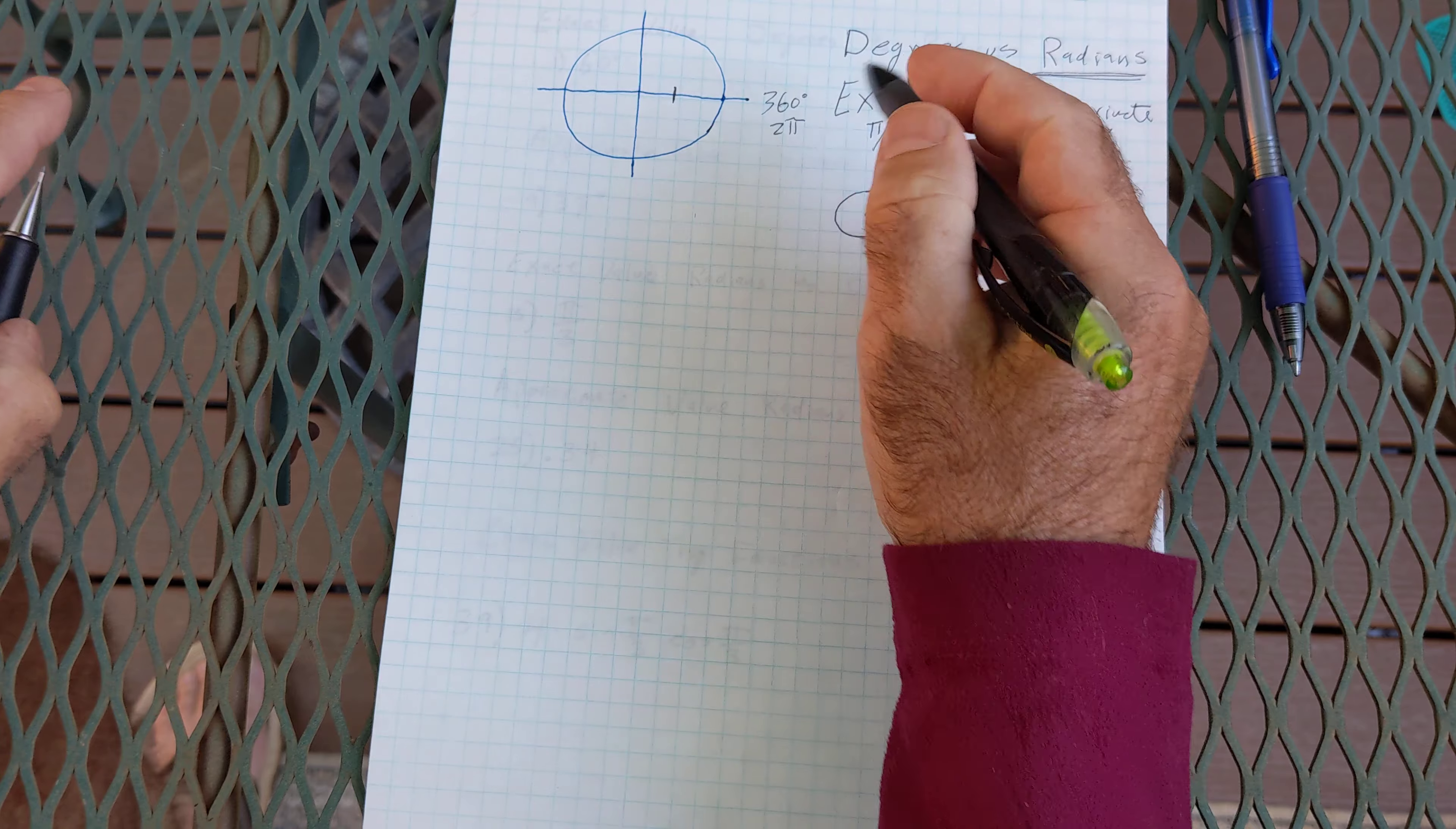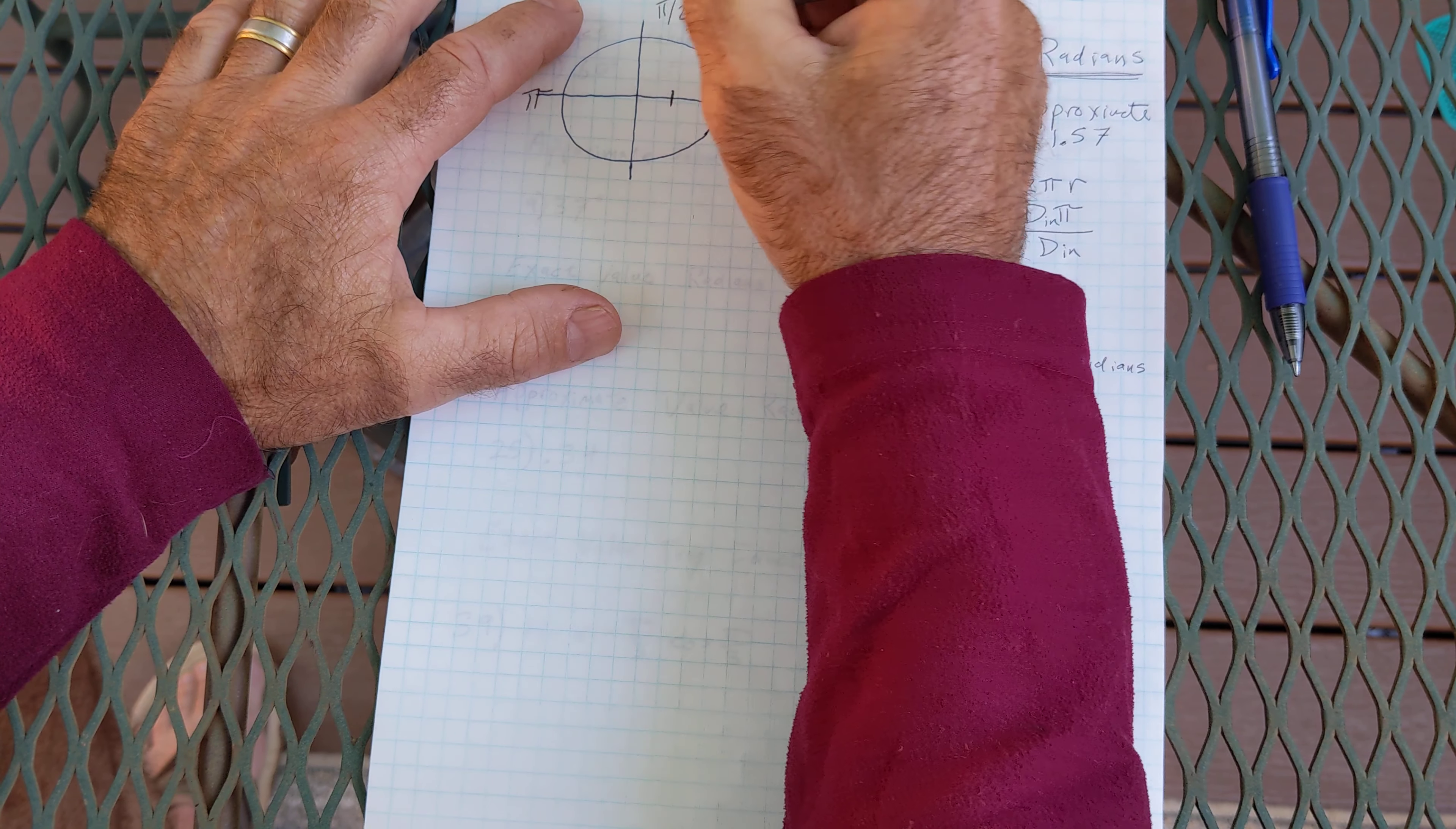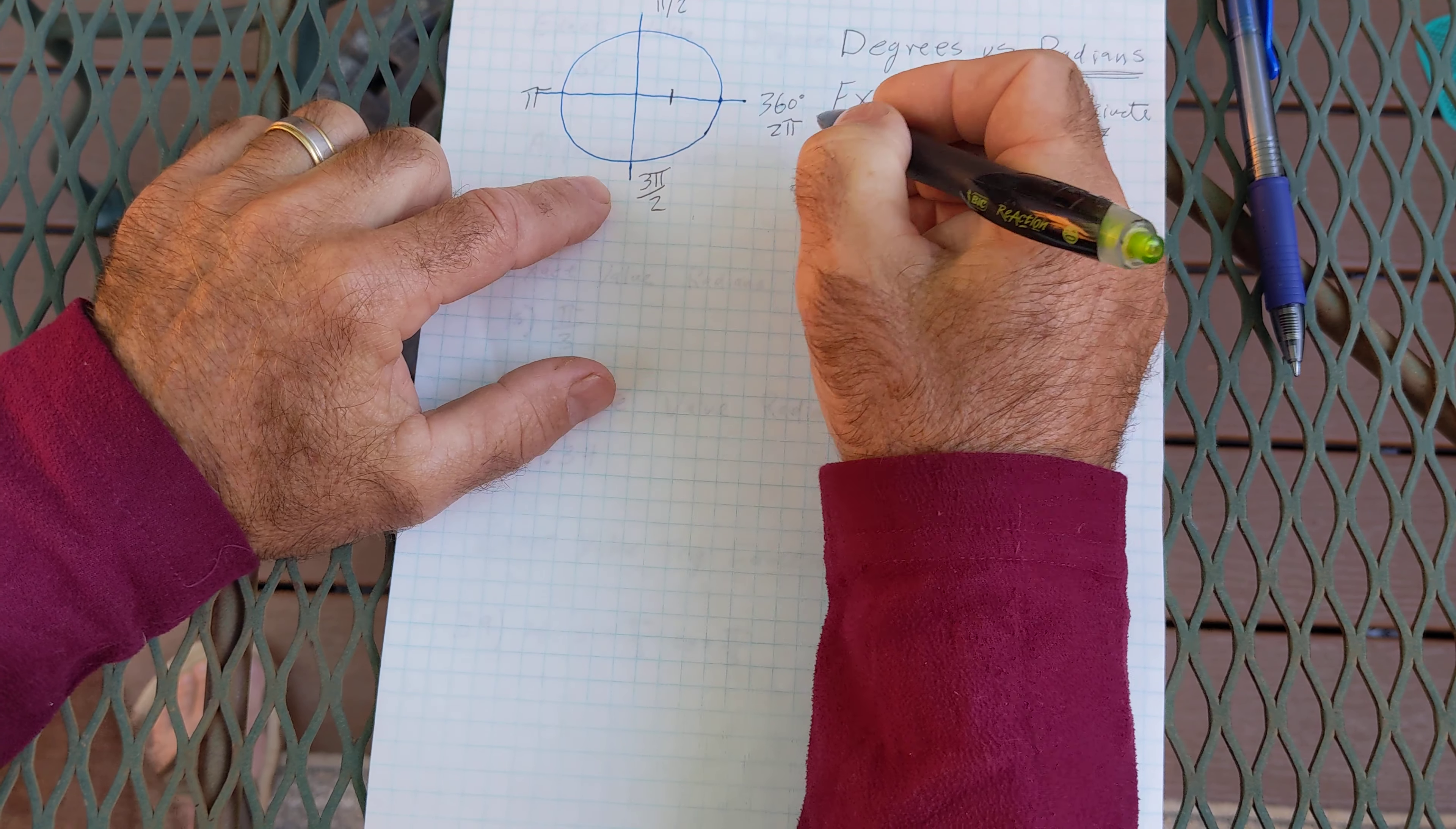So if all the way around is 2 pi half way around will be half of that pi. A quarter of the way around will be pi over 2. So 1 quarter, 2 quarters, 3 quarters, 3 pi over 2, 4 quarters.